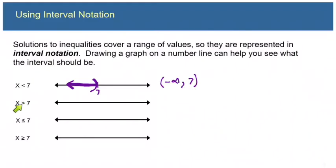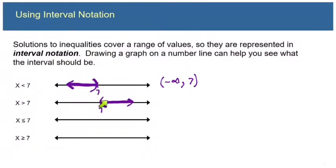Now x is greater than seven is very similar. We put a seven on our number line and shade to the right, because that's where the greater-than-seven numbers are. In this case as well, x cannot equal seven, so we put a round parenthesis. The interval notation is from seven to infinity — always left to right.